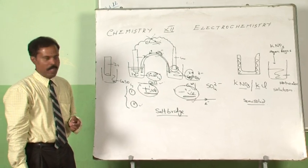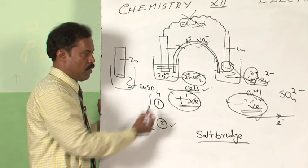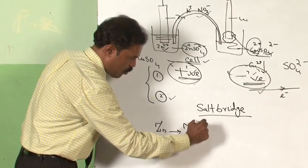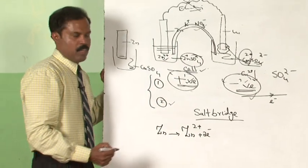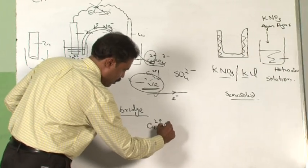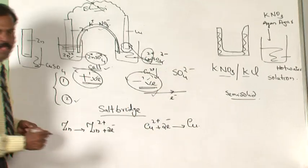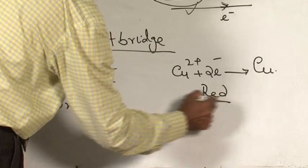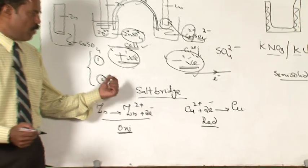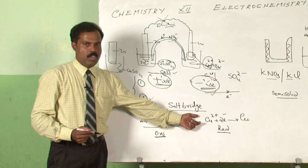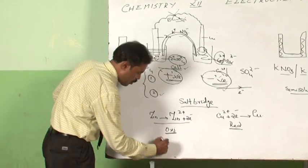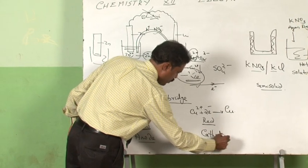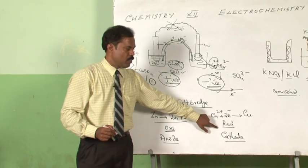This is how a cell works. The cell has two compartments: the one where zinc is getting oxidized to Zn²⁺ ions with removal of two electrons, and the other compartment where electrons are accepted, with Cu²⁺ accepting electrons to become copper. So one part is oxidation and the other part is reduction. Any cell should have two compartments — one where oxidation takes place and one where reduction takes place. The compartment where oxidation takes place is called the anode, and the compartment where reduction takes place is called the cathode.